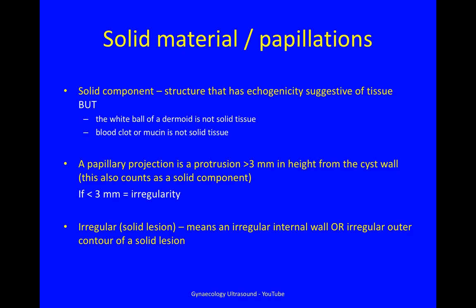A papillary projection is a protrusion which measures more than 3 mm in height from the cyst wall, and it also counts as a solid component. If the protrusion is less than 3 mm, it counts as an irregularity, not as solid material and not as a papillation.